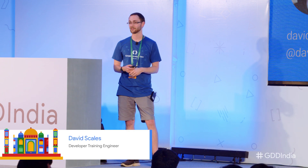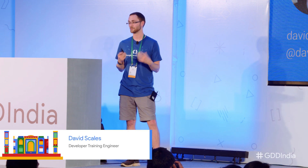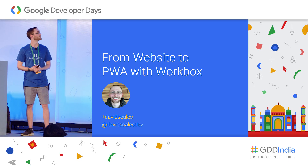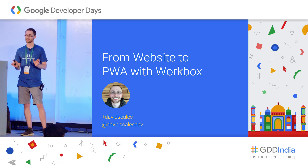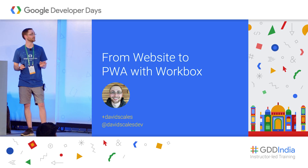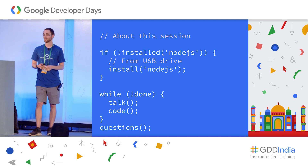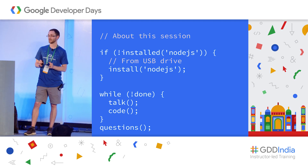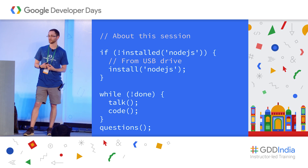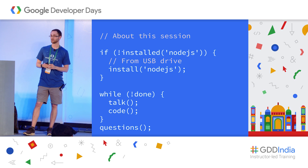Today we're going to learn how to take a website and make it into a progressive web app using Workbox. The only thing you need is Node, because Workbox is a Node module. Version 6.11 is the lowest version you would need. If you don't have it, we'll help you install Node during the lab portion.